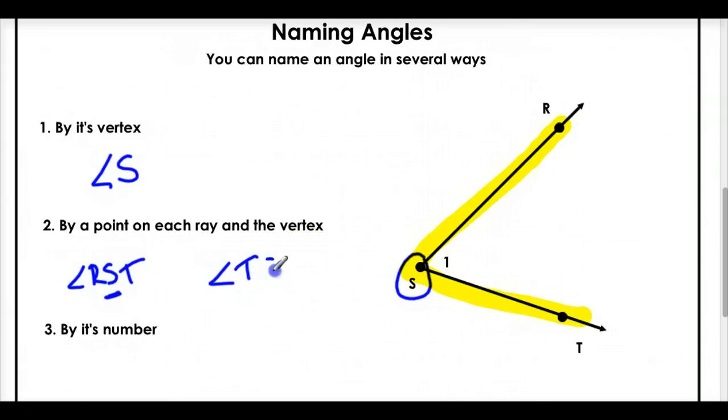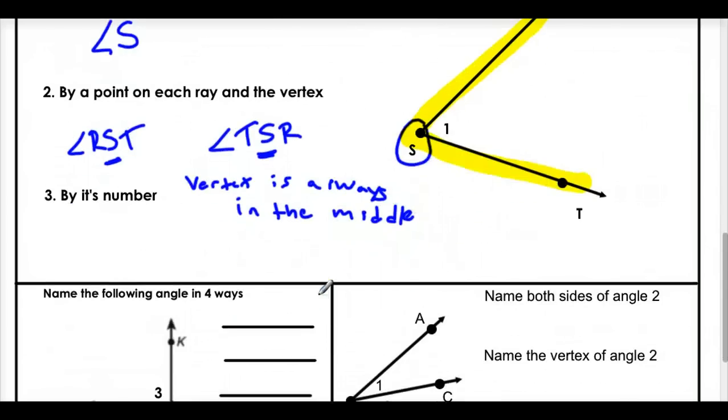Or, angle T, S, R. And once again, the vertex is always in the middle. In the middle. Nothing grinds my gears more when I'm like, hey, what angle is this? And people are like, uh, is it R, T, S? No. The vertex has to be in the middle.